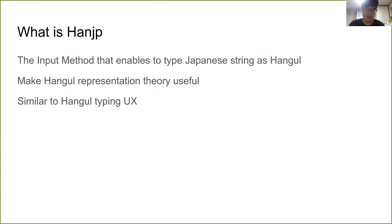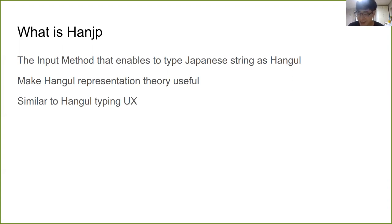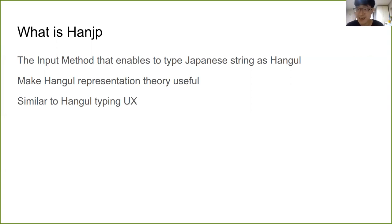So, what is the HanJP? HanJP is a Japanese input method which enables typing Japanese strings as Korean Hangeul. Hangeul is the Korean alphabet. Koreans write sentences as Hangeul.